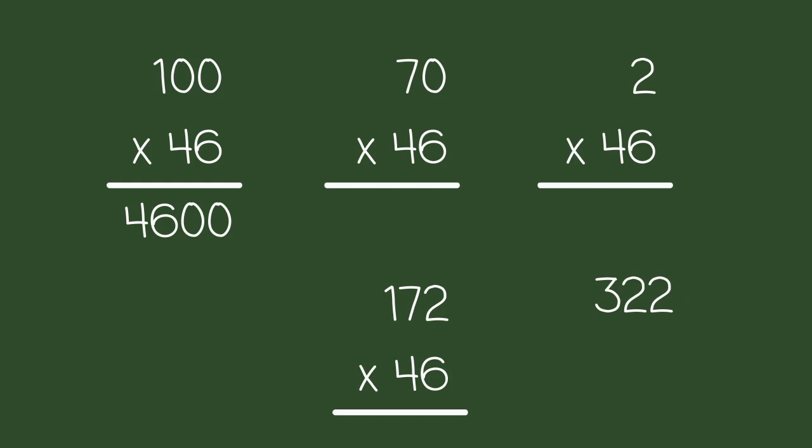When you count 46 seven times, you end up with 322. Now just add the zero at the end. There you have it. 70 times 46 equals 3220.